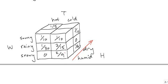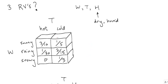So by summing out or marginalizing out humidity, you'll be left with this diagram here, which is what we originally had.